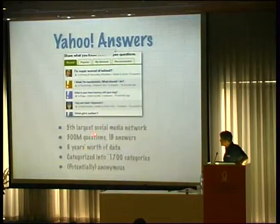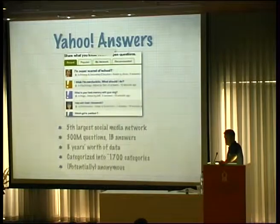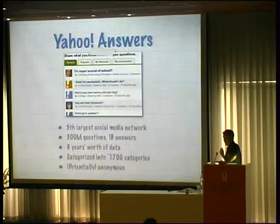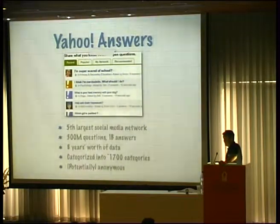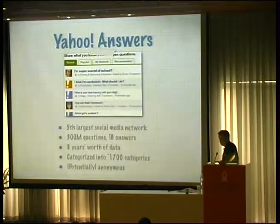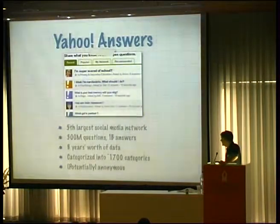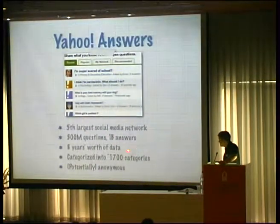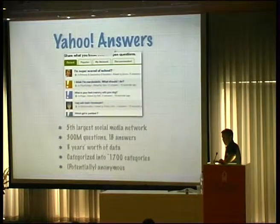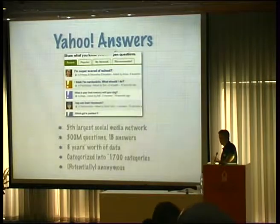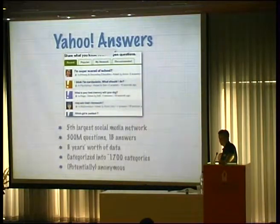Of particular interest is the taxonomy of the site — the categories into which questions are classified. Once an asker posts a question, they are asked to put it in one of about 1,700 predefined categories in a hierarchy with a maximum depth of four, usually three. Examples include education, psychology, dogs, and so on. This structure gives us an easy way to define what a question is about without having to do NLP and actually read the text.